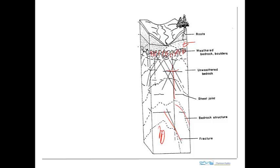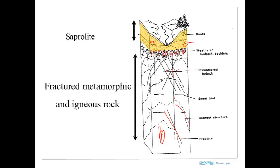There are three zones typically recognized: the saprolite, the fractured metamorphic and igneous rock, and then a transition zone between them.